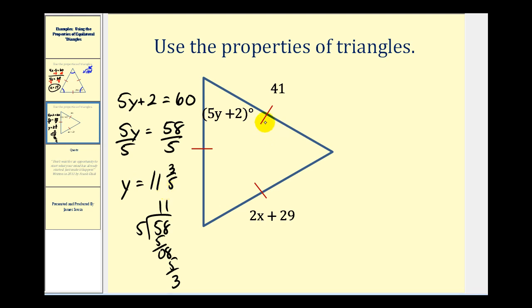Now let's talk about determining the value of x. To determine the value of x, since all of the sides have the same length, if this side has a length of 41, this side over here must also have a length of 41. So the equation to determine the value of x would be 2x plus 29 equals 41. And now we have our basic two-step equation.